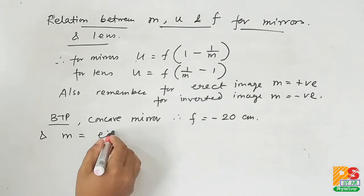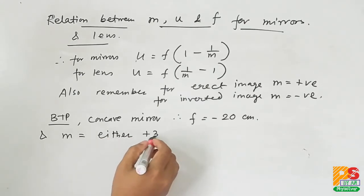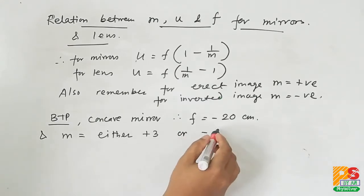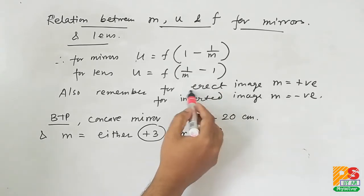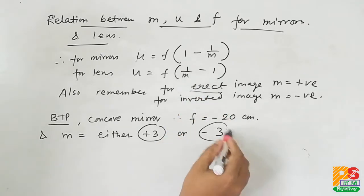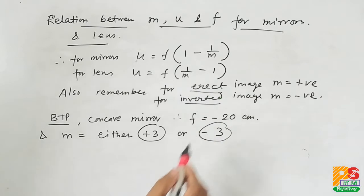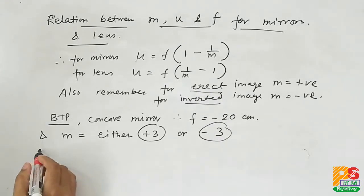And m is either plus 3 or minus 3, because it is not written that the image is erect with respect to object or inverted with respect to object. So we have to do the two possible situations.